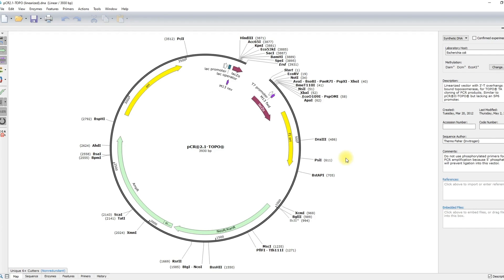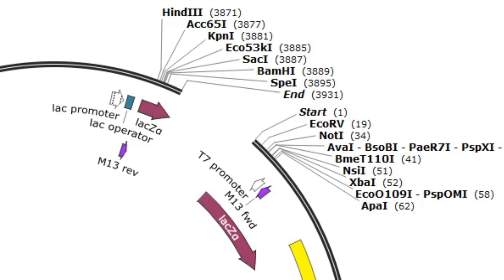While original topo-cloning vectors required TA overhangs, equally robust variants now allow blunt-end topo-cloning and directional topo-cloning. Topo-TA vectors are purchased in a ready-to-use format, linearized with topoisomerase attached to the ends of the vector.